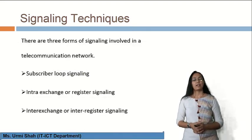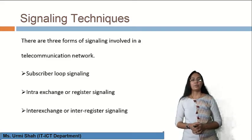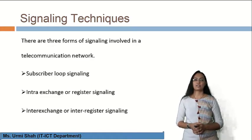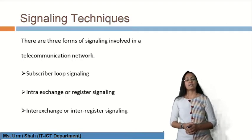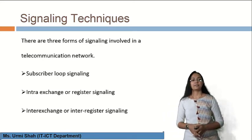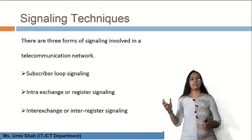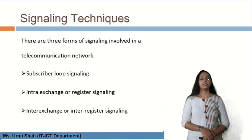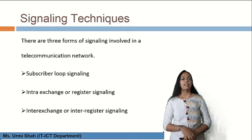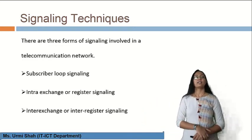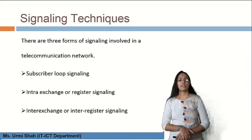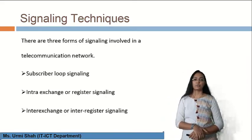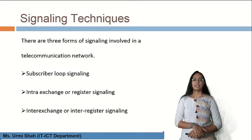There are three forms of signaling involved in a telecommunication network: subscriber loop signaling, intra-exchange or register signaling, and inter-exchange or inter-register signaling. If we want to transfer a signal from one place to another, the most important thing is to have the signal information travel from source to destination. The next important thing is whether the signal gives an acknowledgement back from receiver to sender that it has reached the destination.